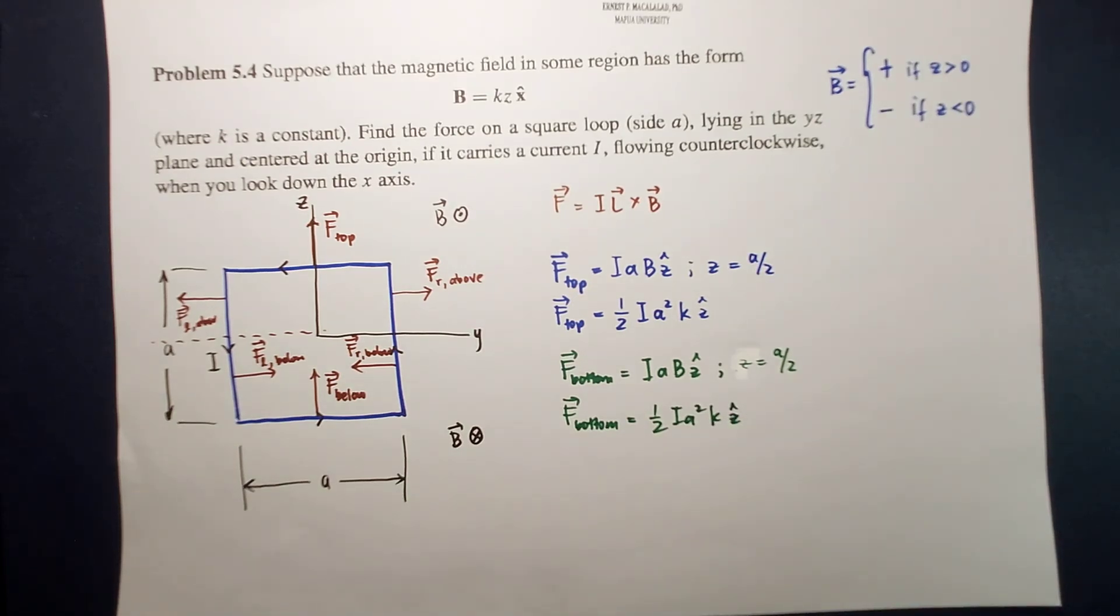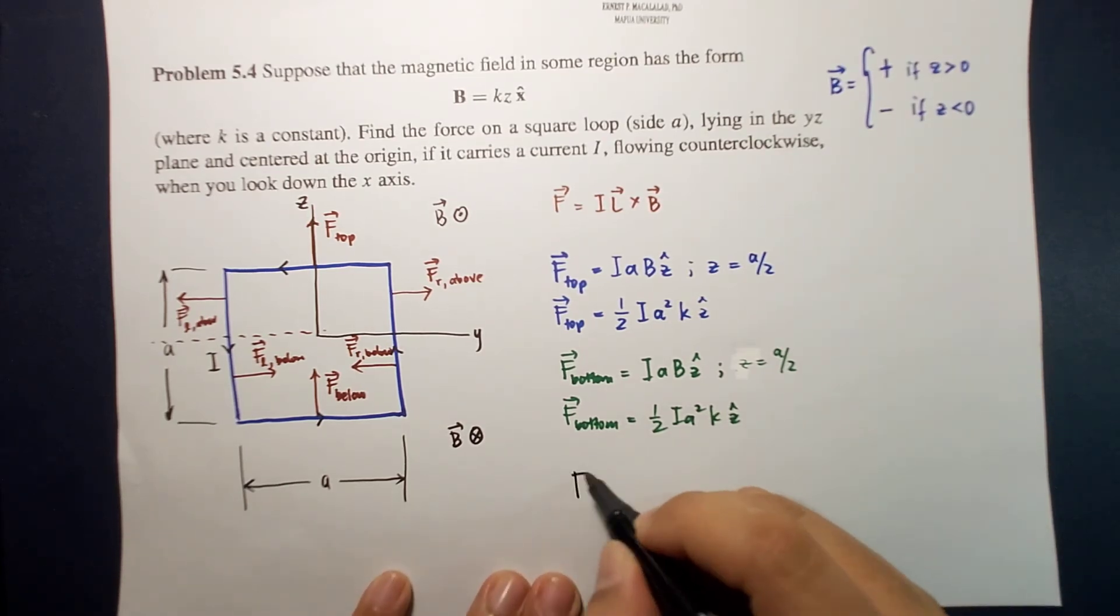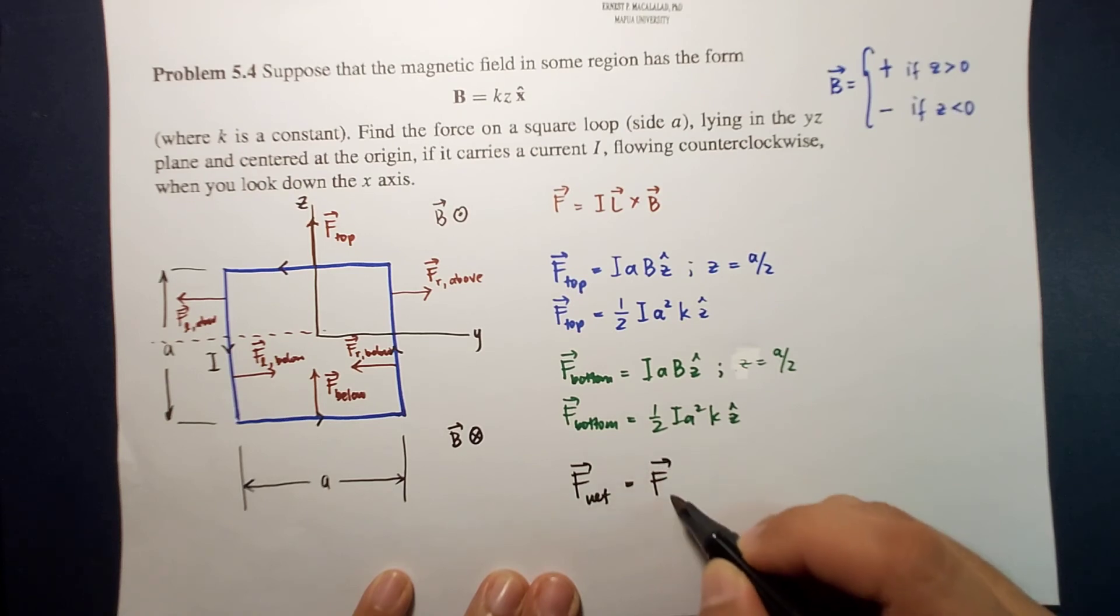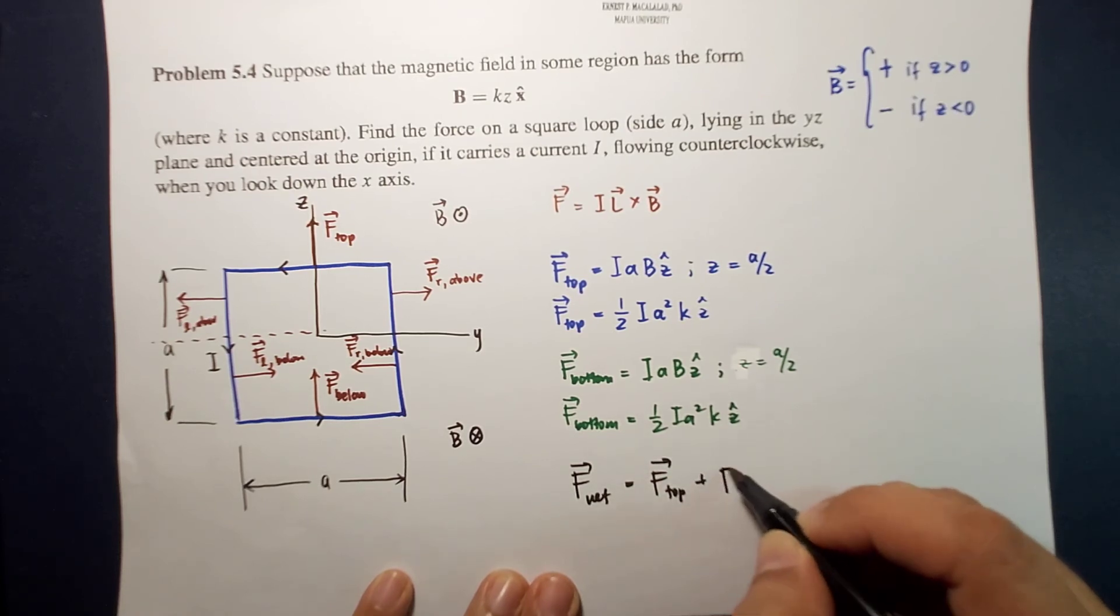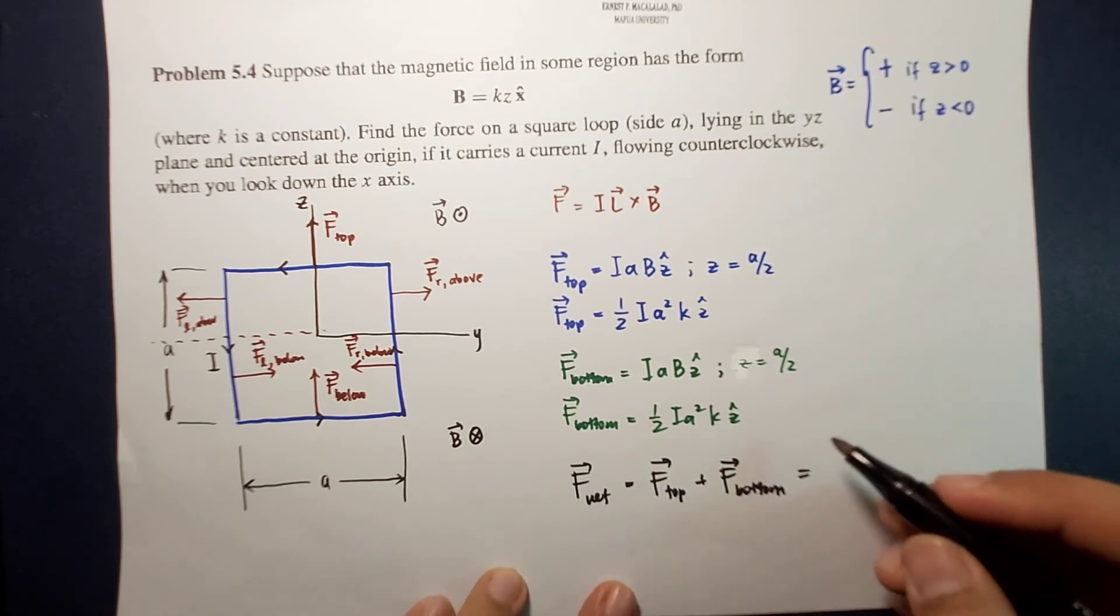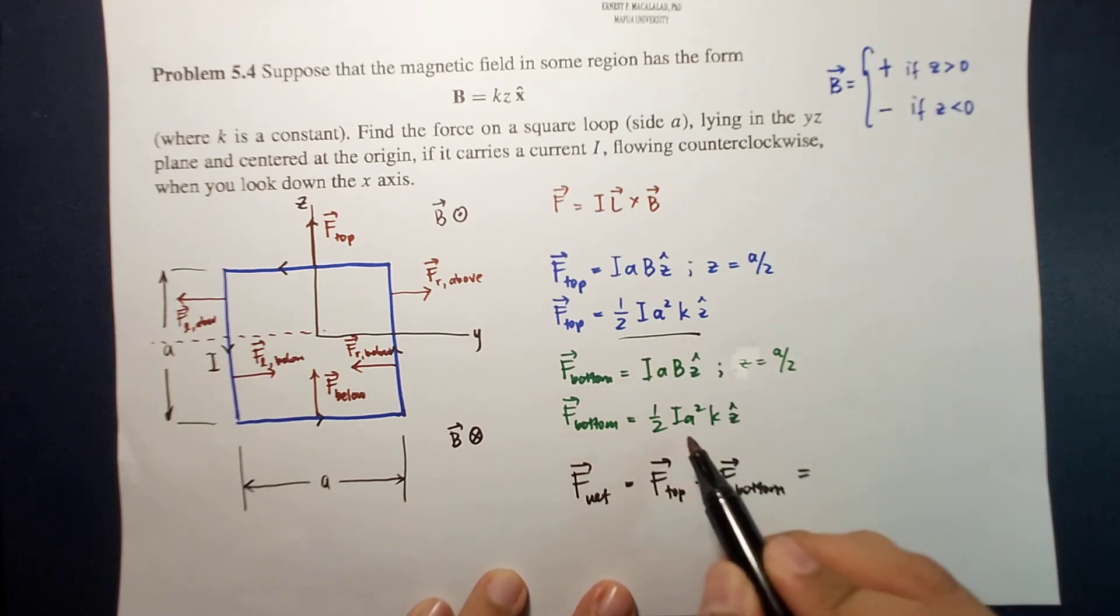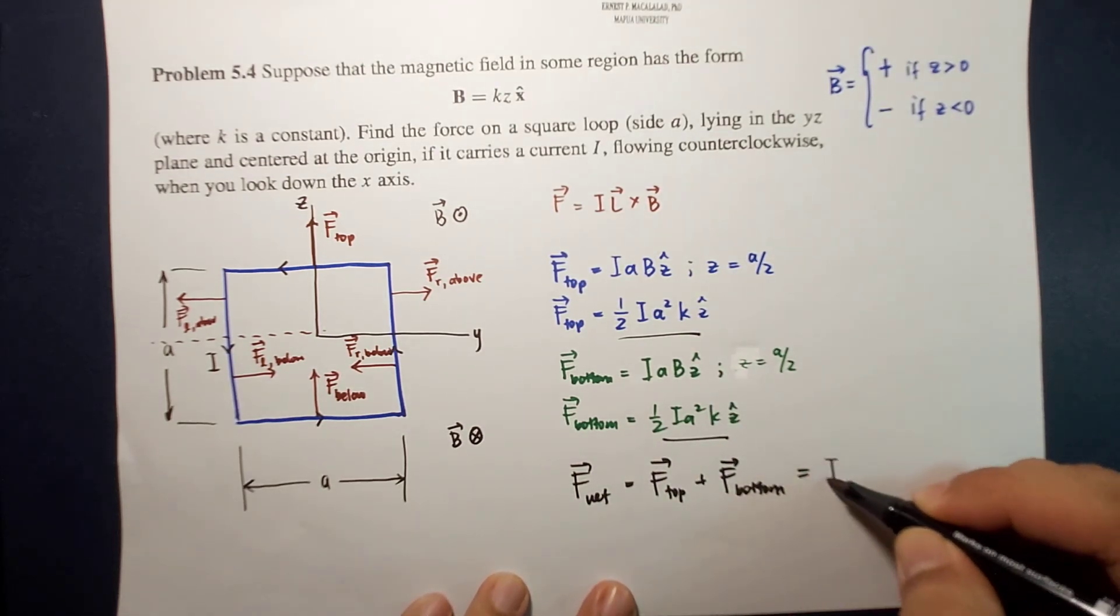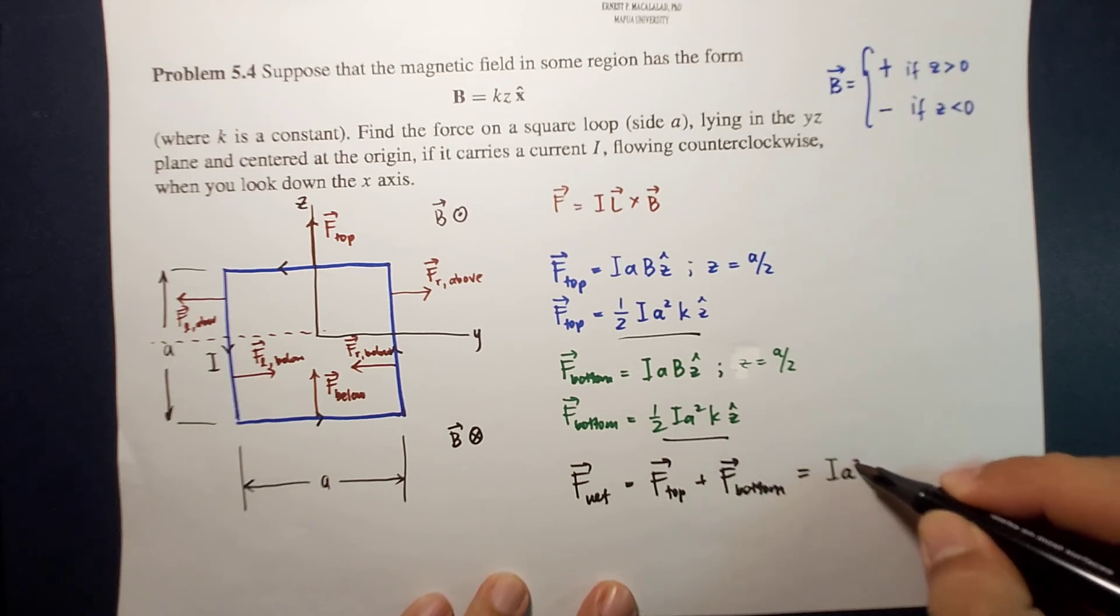So therefore the net force will be F top plus F bottom, and this is equal to this plus this. So this is equal to I a squared k z-hat.